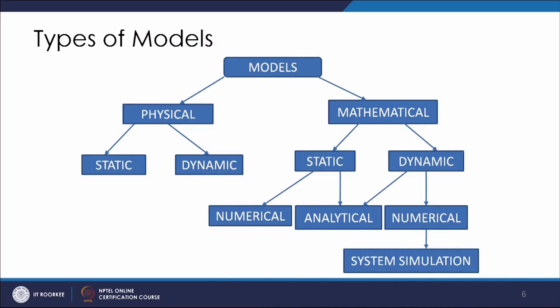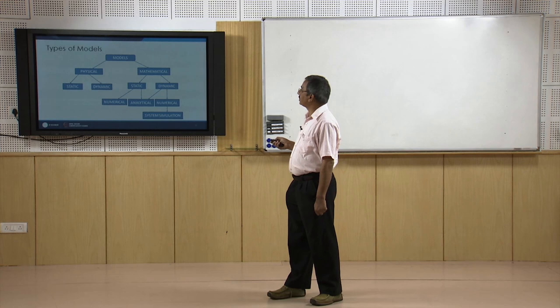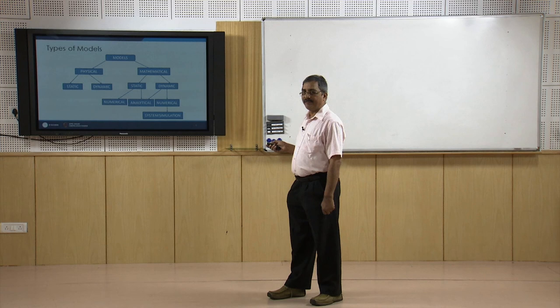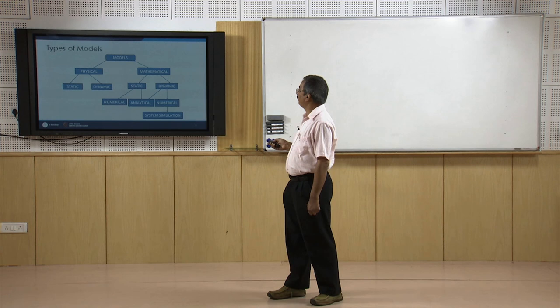Looking at the broad examples of model types — physical and mathematical models — let us see a more elaborate classification of the various model types. Models can be classified as physical models and mathematical models. Physical models can further be classified as static and dynamic models. Static models can be classified as numerical and analytical models. Likewise, dynamic models can be classified as analytical and numerical models, and from numerical models one can proceed to system simulation.